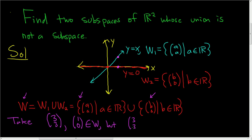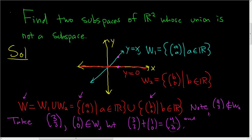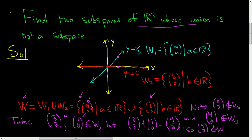But let's look at (3, 3) plus (1, 0). That gives us (3+1, 3+0) = (4, 3). Now, (4, 3) is not in W₂ because 3 ≠ 0, and all elements of W₂ have second component equal to zero. And (4, 3) is not in W₁ either, because if it were, the x and y components would have to be equal — but 4 ≠ 3. So (4, 3) is not in the union W. We have two vectors in W whose sum is not in W, so W is not closed under vector addition. Therefore W is not a subspace of R².